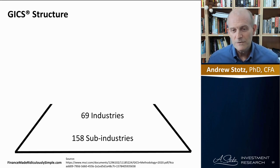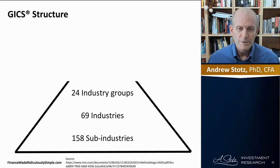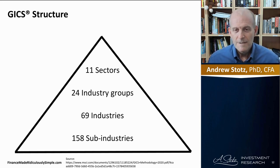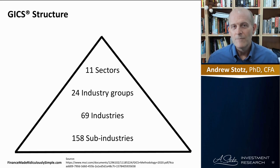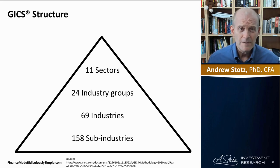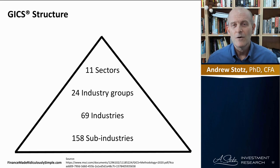Each of those sub-industries fits into an industry, each industry fits into an industry group, and at the top of this pyramid are the 11 sectors — the largest classification. We are going to focus on the top of this triangle. All 14,809 companies we've looked at fit into one of the 11 sectors.